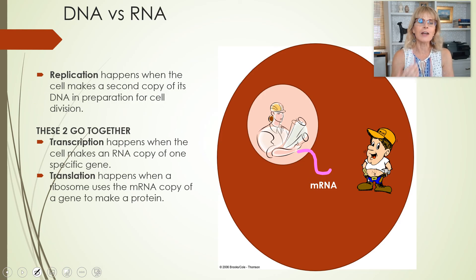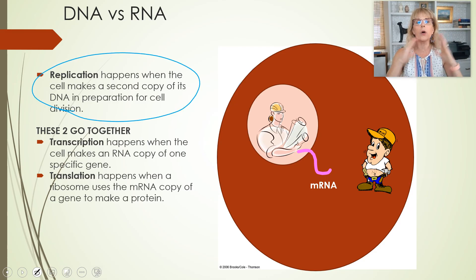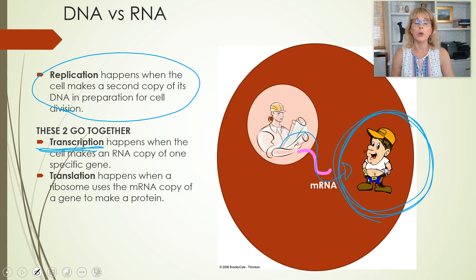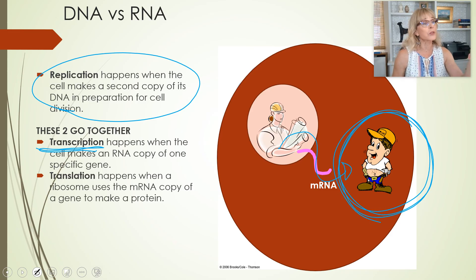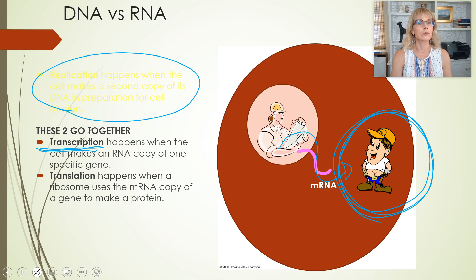Just to keep this straight: replication happens when the cell makes a whole copy of DNA in preparation for cell division. Transcription and translation happen together — transcription is making a copy of messenger RNA, translation is when the ribosome builds a protein. Transcription happens in the nucleus because of RNA polymerase; translation happens in the cytoplasm because of what the ribosome does.